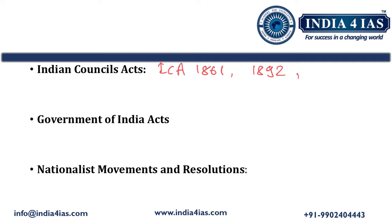Then we should talk about the Indian Councils Act of 1909, also known as the Morley-Minto Reforms, which introduced separate electorates for Muslims — a divide and rule policy of the British. We should also write how the constitutional makers overcame this policy by introducing universal adult franchise and a single electorate for all Indians.